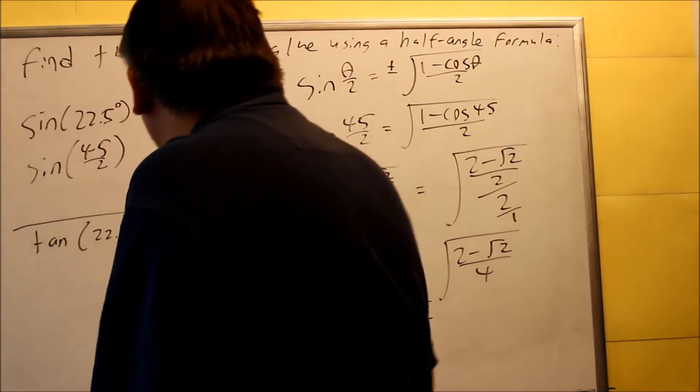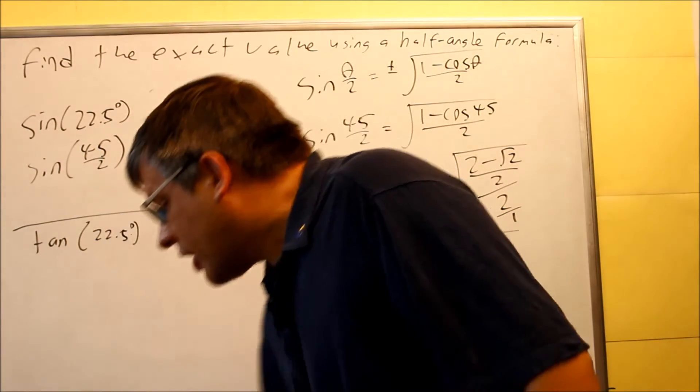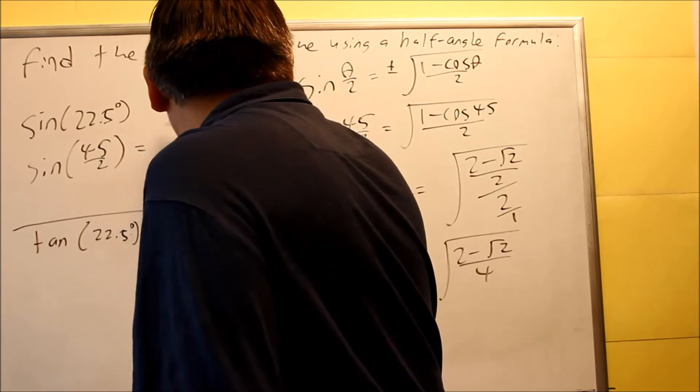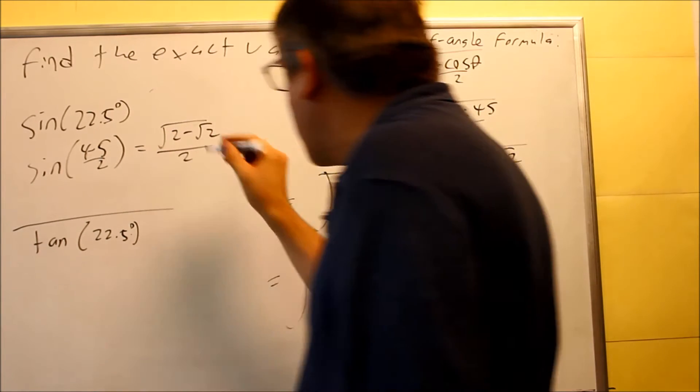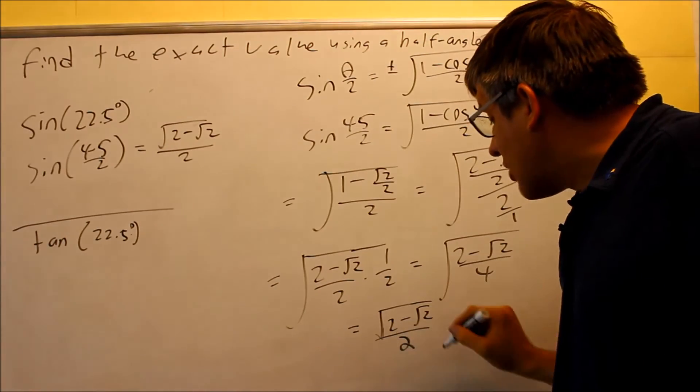So now that I have that one complete, I'm ready to write down my exact value. And my exact value is going to be this one right here. And the 2 is going to be outside of the radical.